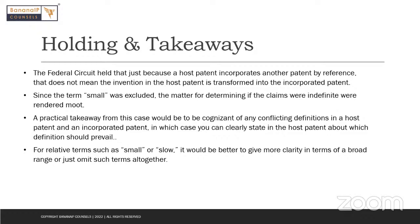From a drafting practical standpoint, one should be cognizant of what patents are being incorporated by reference, and in such a situation, one should be aware of whether there are any conflicting definitions, and if so, there should be some clear disclaimer in the host patent about which definition should prevail. Secondly, what led to the patents being considered indefinite was the term 'small,' and as such any relative terms should be given a lot more clarity in terms of a broad range, so that there is some metric by which one could define what is considered small, slow, or any other relative term. Alternatively, one could just omit such a term altogether because that just adds an unnecessary limitation.